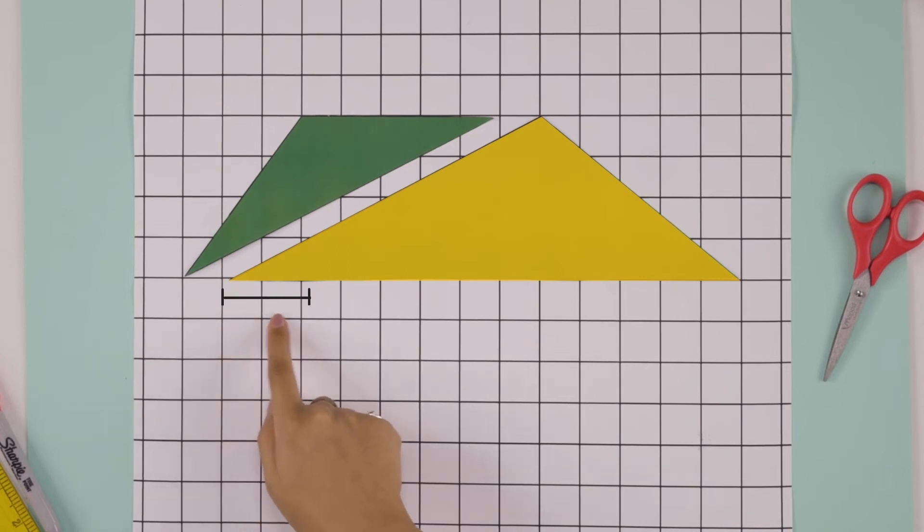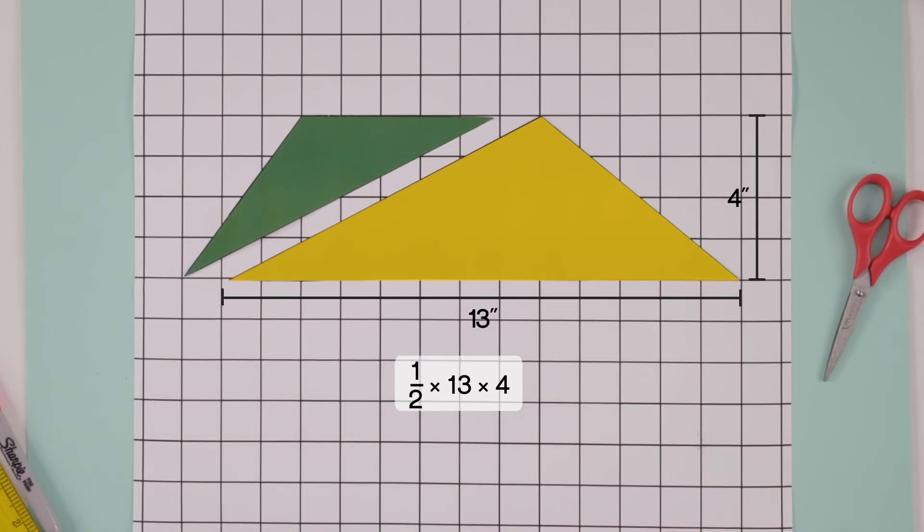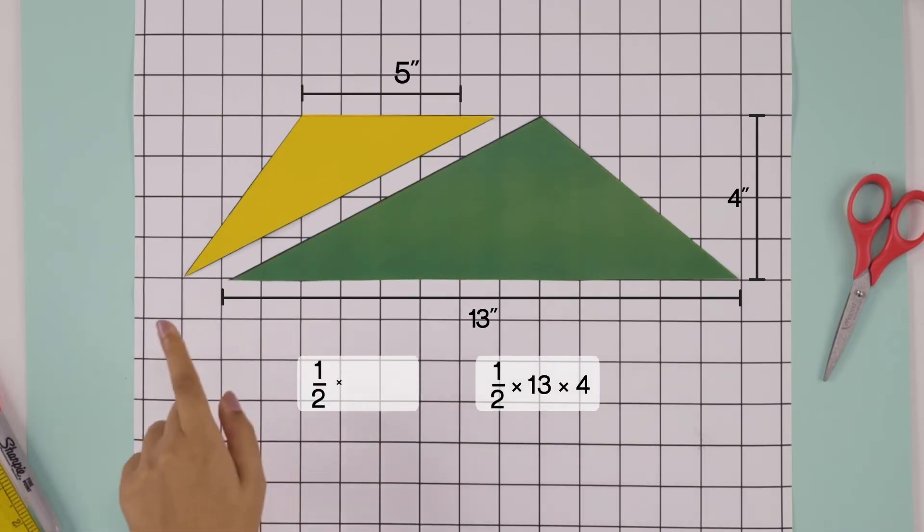The area of this one must be half of the base 13 times height 4. And the area of this one must be half of 5 times 4. Let's add them up.